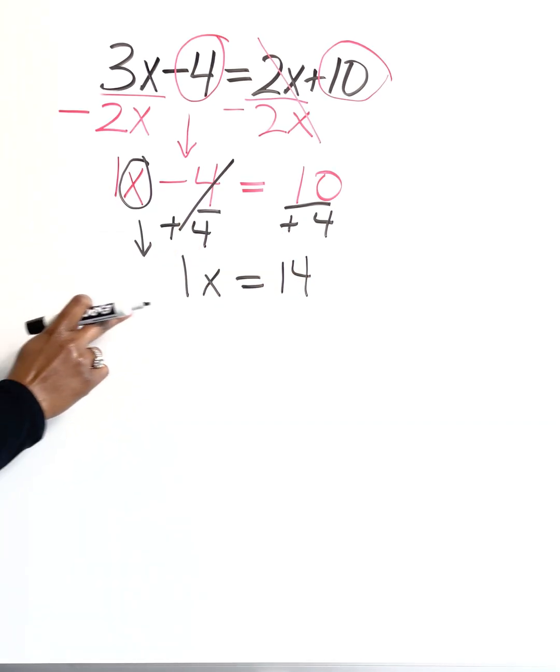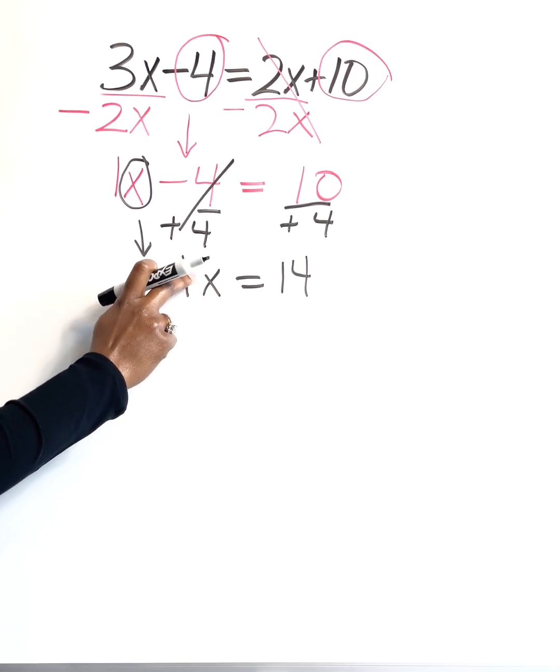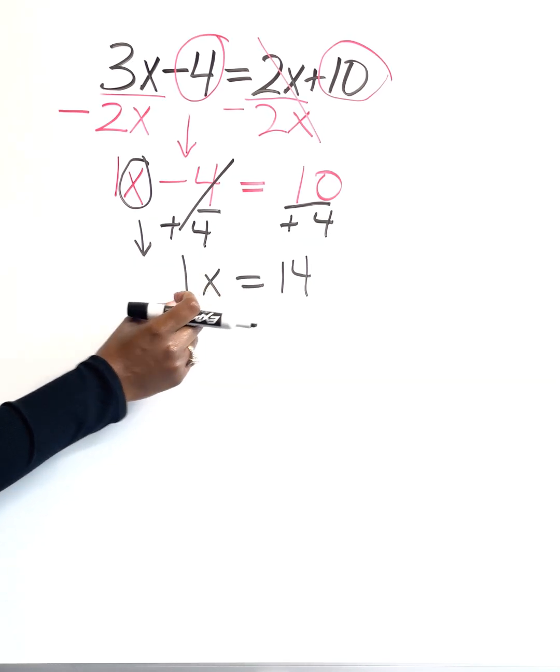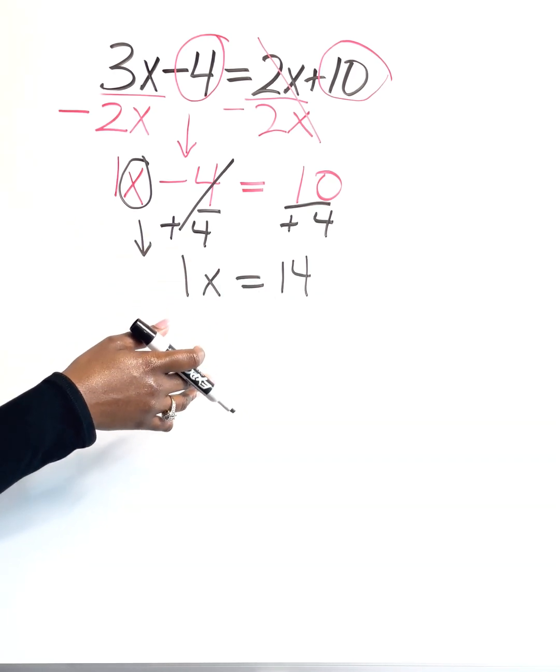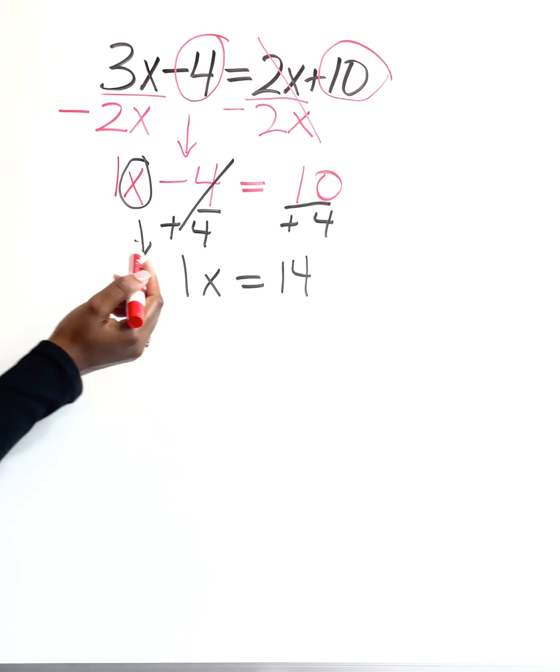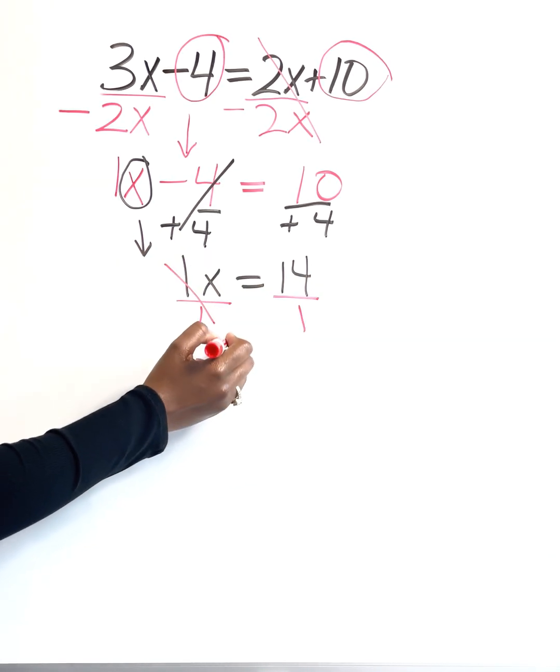And of course our last step is to separate these two. Anytime you see a number stuck to a variable and there's nothing in between them, they're joined together through multiplication. So you're going to go ahead and do the opposite of that, which is divide. So we're going to divide both sides by 1. These ones are going to cancel out.